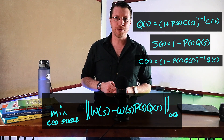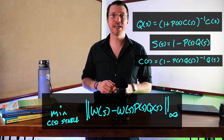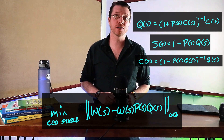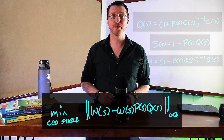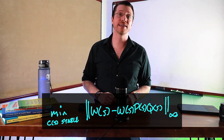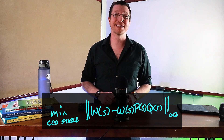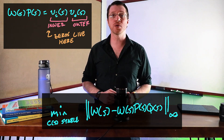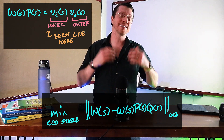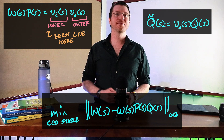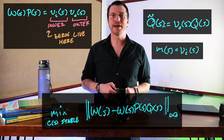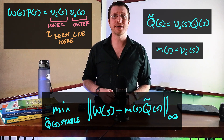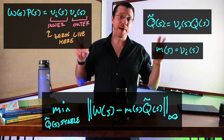Here is our new optimization problem, where we still have the same weight, but S has been replaced within this relation coming from Q. Next, we are going to take the product of our plant with the weight function, which is multiplying Q, and we are going to re-express the quantity as VI times VO, where VI is the inner factor of WP and VO is the outer factor. Outer functions don't have zeros, and we're going to absorb that into our Q term by writing tilde Q equal to VO times Q. Let's call MS our inner function VI. We are going to find the tilde Q in H∞ such that the norm of this quantity is minimized. This is called the model matching problem.